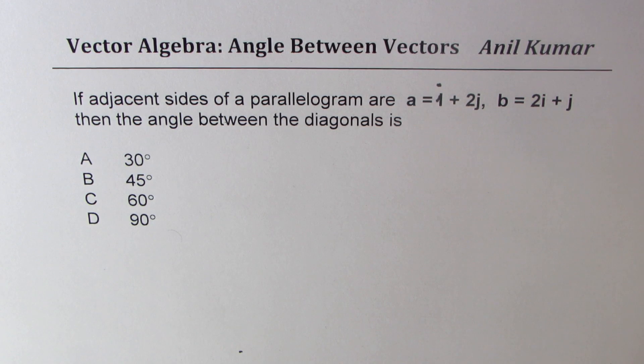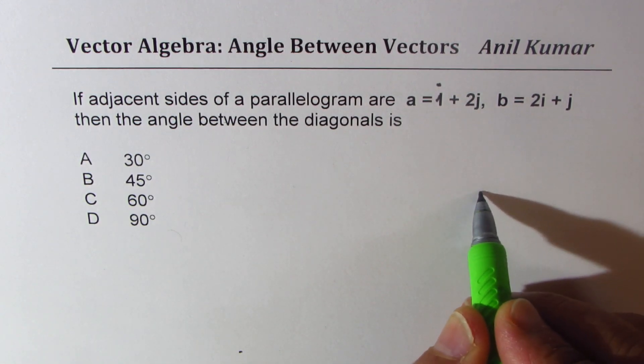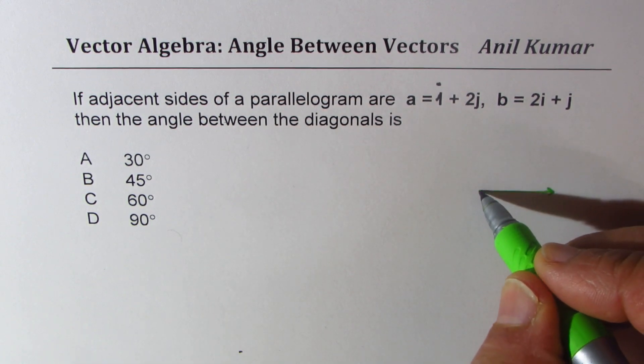You need to find the angle between the diagonals. You can actually pause the video, answer the question, and then look into my suggestions. Now let us roughly sketch and understand what we need to figure out. In this situation, let's say the vectors are a and b. Let's say this is vector a and the other vector b is kind of like this.